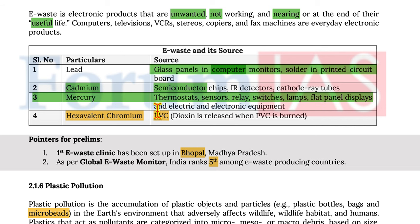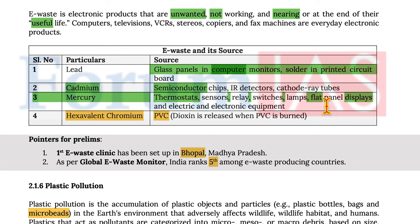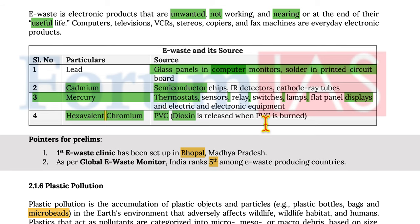Mercury in e-waste is present in thermostat sensors, relays, switches, lamps, flat panel displays, and other electrical and electronic equipment. Hexavalent chromium is generally present in PVC, and dioxin is released when PVC is burnt.